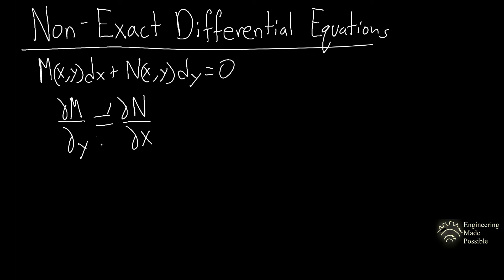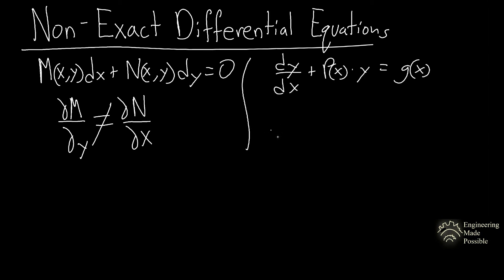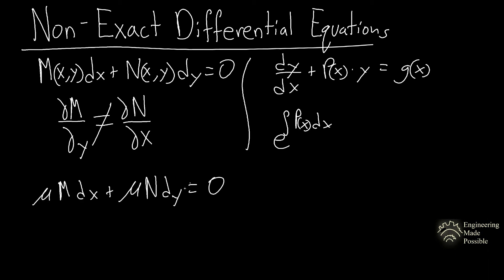It's non-exact when these aren't equal to each other. The main concept is to come up with an integrating factor that you're able to multiply on both sides of the equation to make it exact. Much like previously with first order linear differential equations, where we used an integrating factor e to the power of the integral of p(x) dx and multiplied both sides. We're applying the same concept here. We'll call this factor mu and multiply both sides of the equation.